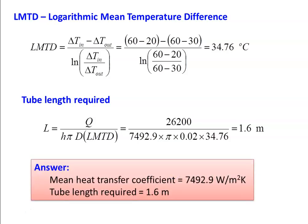Answers for Example 9: mean heat transfer coefficient = 7492.9 W/m²·K, tube length required = 1.6 m.